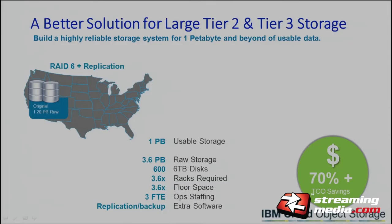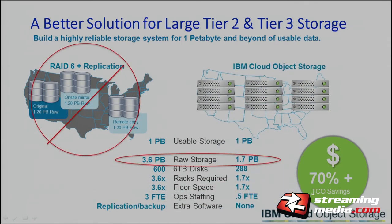Object storage is way better — a better solution for large tier 2 and tier 3 storage. Tier 1 should stay on RAID. You would have RAID 6 plus replication, then a mirror of your RAID 6, and then a backup for your mirrored RAID 6 — a lot of customers actually do this, and it's very costly. If we use IBM Cloud Object Storage, we can cut the storage overhead from 3.6 petabytes down to 1.7 for your raw, and you get the same amount of usable storage — bringing you down into cloud storage economics.